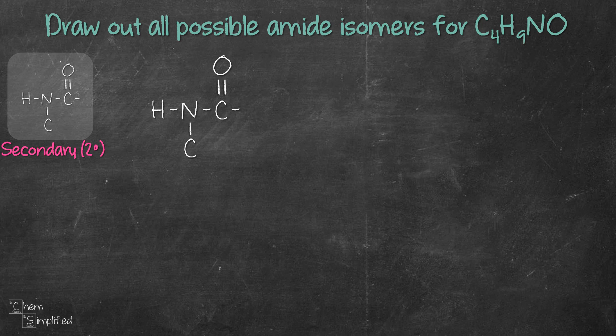Moving on to the secondary amide. We've already used up two carbons, that means we can place the remaining two carbons like this. This will give us a three carbon chain secondary amide. We can shorten the chain to a two carbon chain like this, and then we place the remaining carbon here. This will give us a two carbon chain secondary amide.